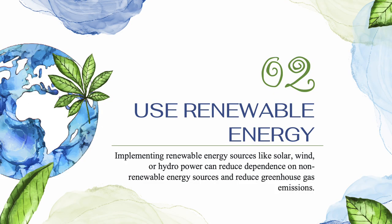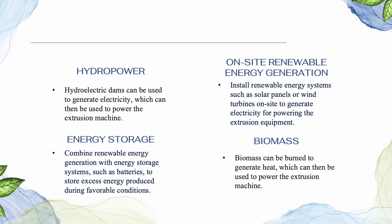Use renewable energy. Implementing renewable energy sources like solar, wind, or hydropower can reduce dependence on non-renewable energy sources and reduce greenhouse gas emissions. How can we use renewable energy in sustainable manufacturing? First, we use hydropower. Hydroelectric dams can be used to generate electricity, which can then be used to power the extrusion machine. This is a reliable source of energy that can be used to meet peak demand.